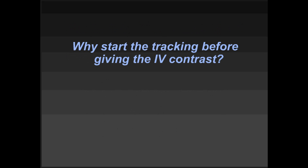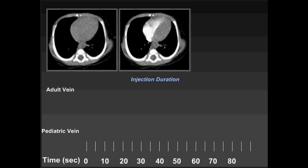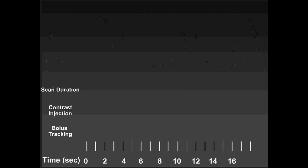Why start tracking before giving IV contrast? Consider an adult arm — you might inject 80 to 120 cc's, providing a nice long column of contrast. Now consider a pediatric arm: for a three-kilogram child, you're giving maybe five and a half cc's — that's it. It isn't a nice long sustained bolus. If you don't time things precisely, you have a very short window for optimal enhancement and you'll miss it. Bolus tracking demonstrates clearly how brief that right- and left-sided opacification window is in the pediatric vein.